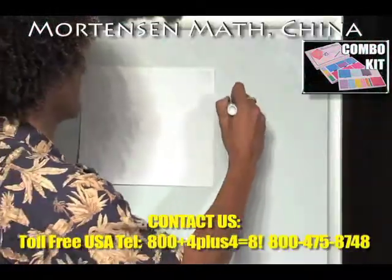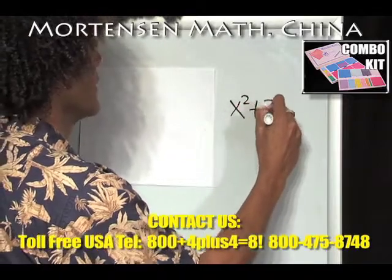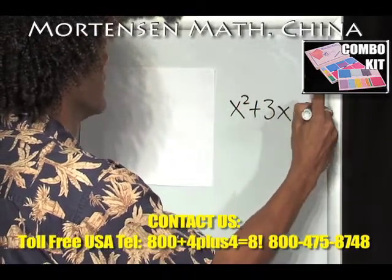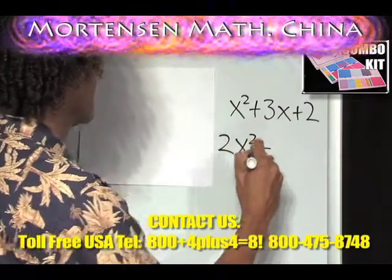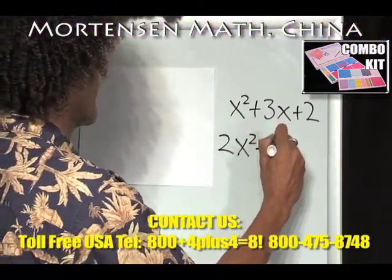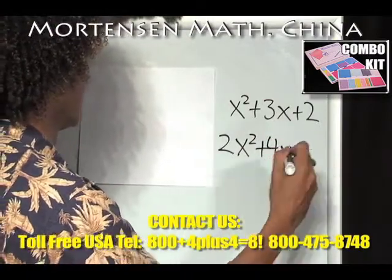So, here I'm having x squared, using the symbols, plus 3x plus 2. And here I have 2x squared plus 4x plus 4.